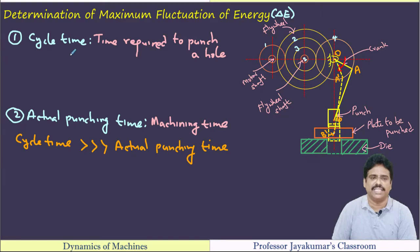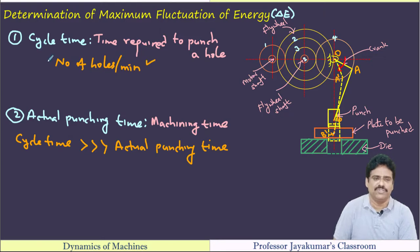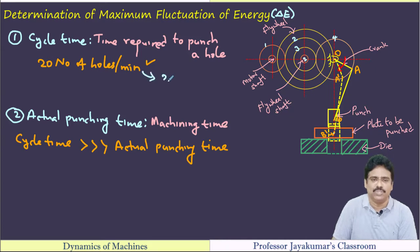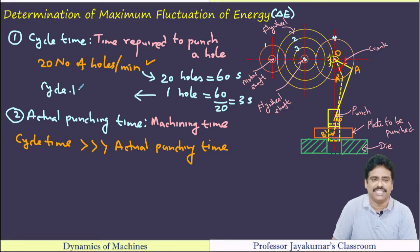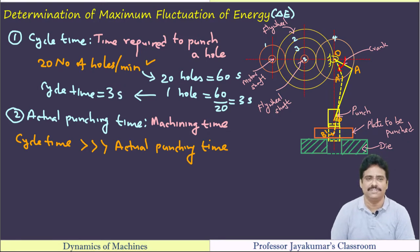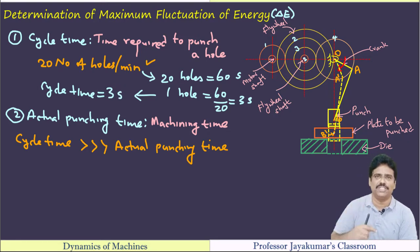How to find the cycle time? In our problem they will give number of holes per minute. For example, if they have given 20 holes per minute, it means 20 holes in 60 seconds, so one hole in 3 seconds. Therefore, cycle time for the given data is 3 seconds — that means time required to punch a hole. One 2π radian will be completed in 3 seconds cycle time for this example.